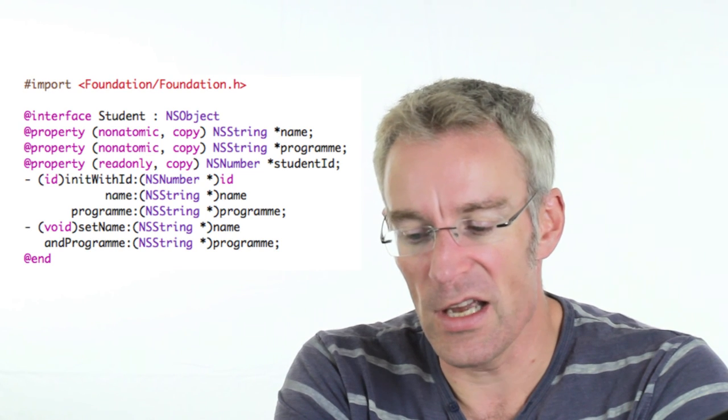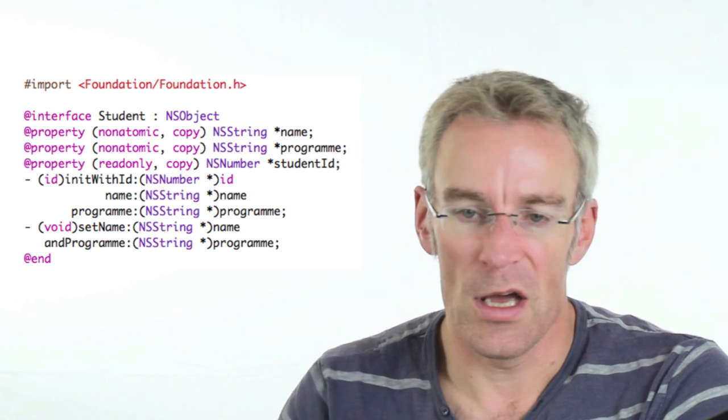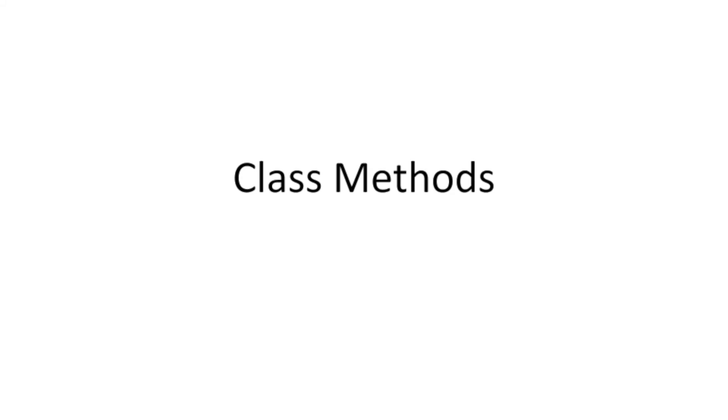I'm going to create another initializer called initWithId:name:program:. I put that line in my header file to declare that initializer, and then in the implementation file I add the code: self = [super init], if self, then copy the values from the parameters into my new object. Importantly, I'm not using the properties here — I'm using the instance variables directly. This is the only time you should use instance variables directly, because until you've run this code there is no student object, and if there's no student object yet there are no getters and setters.